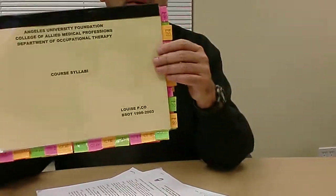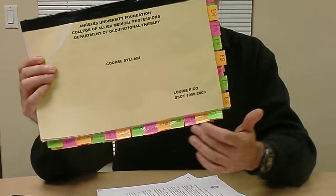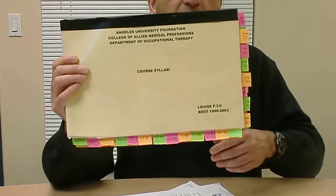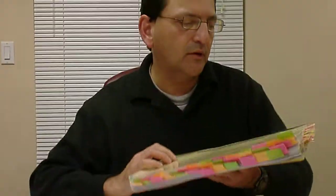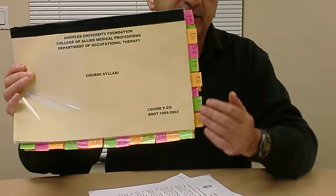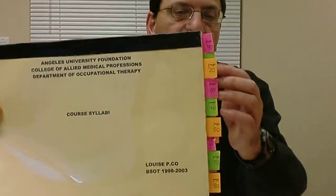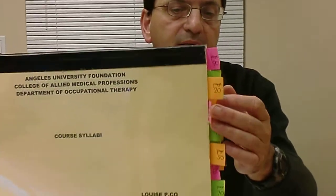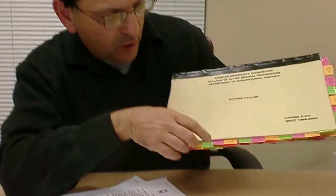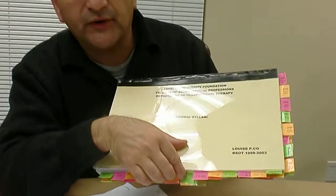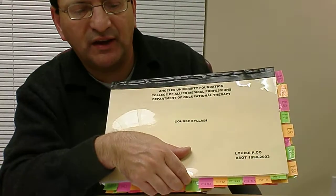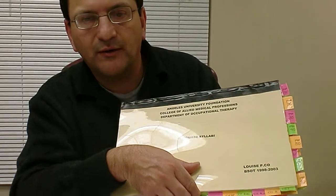If you are fortunate enough to get a complete copy of this document, I recommend that you use tabs to document things. For example, in this particular application, on the right-hand side are tabs on the page number — page 50, page 100. And on the bottom here are tabs with the actual course numbers. All this will make it easier for the NBCOT examiner to get through your application in a timely manner to render a fair decision.